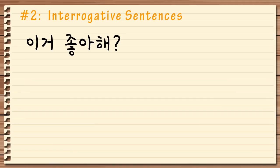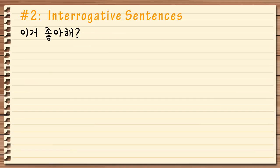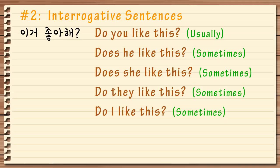In Korean, subjects and objects can be dropped from a sentence when it is obvious. So, 이거 좋아해? It usually means 'do you like this?' But sometimes, depending on the situation, it can have a different meaning. And of course, you can always put a subject in a sentence if you want to.